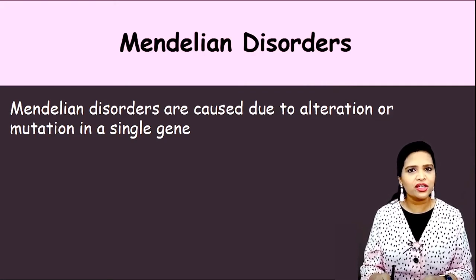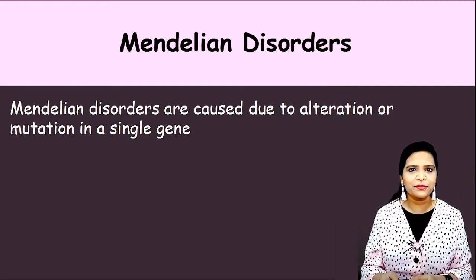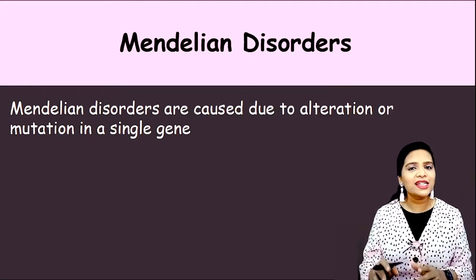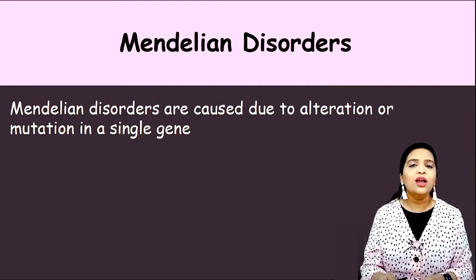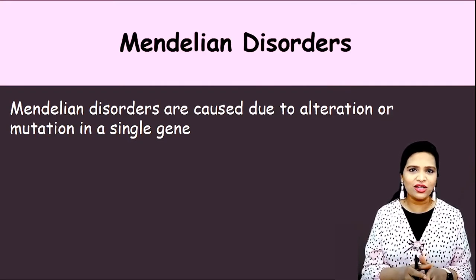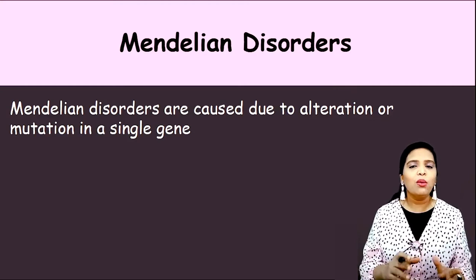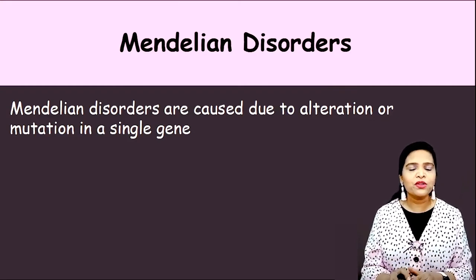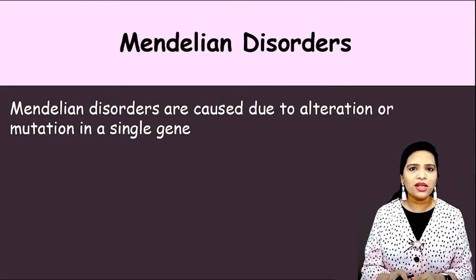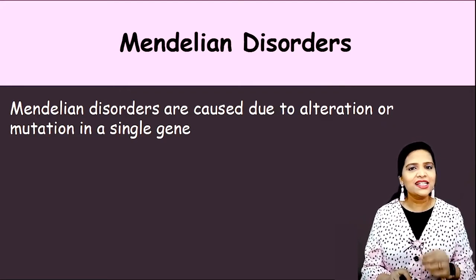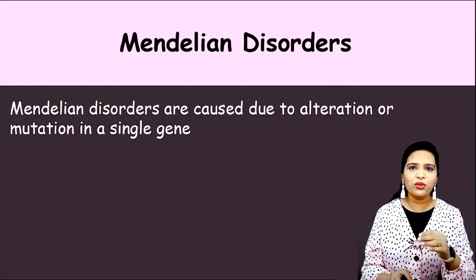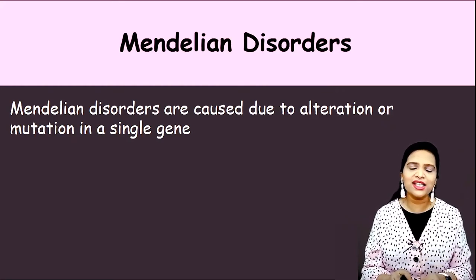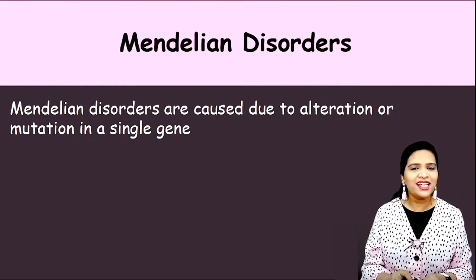In our previous session, we already covered in detail about what is a genetic disorder, how genetic disorders arise, and the classification of genetic disorders. We classify genetic disorders into Mendelian disorders and chromosomal disorders. Without wasting much time, let's directly jump into the examples for Mendelian disorders. This is a one-shot video in which we are going to learn all the important Mendelian disorders given in your syllabus.